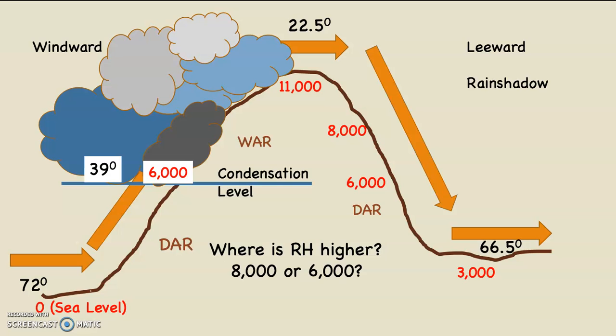So the relative humidity is higher at 8,000 feet, and of course at 6,000 feet the relative humidity is higher than at 3,000 feet. This is the reason the backsides of mountains — the leeward sides, the rain shadow sides — tend to be very dry: the air is descending, warming, relative humidity is going down, and no clouds are forming. No clouds, no precipitation. So 8,000 feet is our answer.